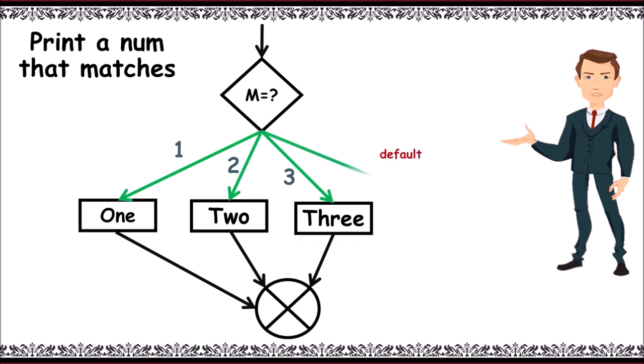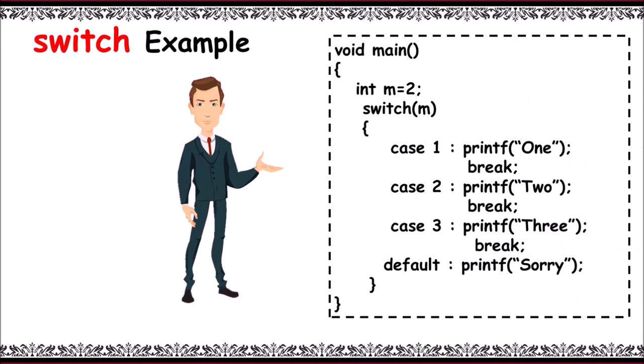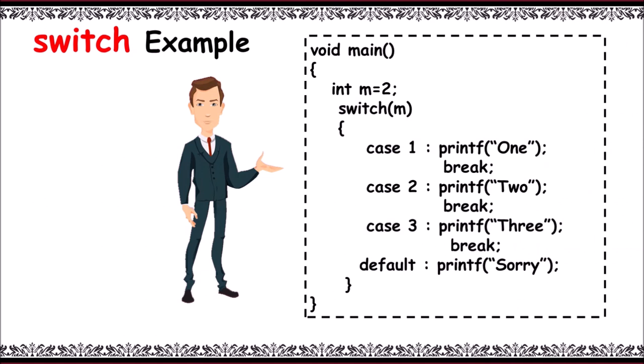Let us learn this with the help of an example program. Here m value is 2. Switch of m returns constant 2. First verified with case 1, as it is not matched it skips it and checks with case 2.